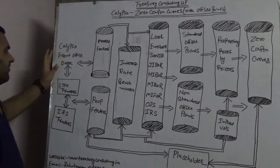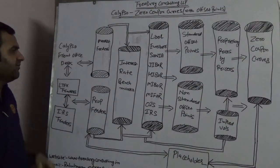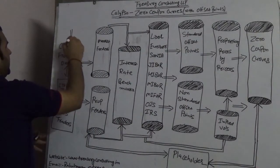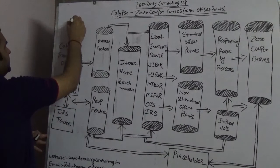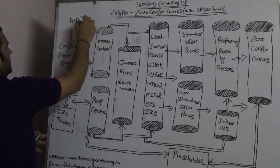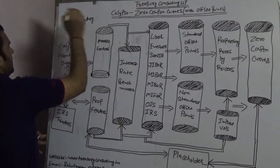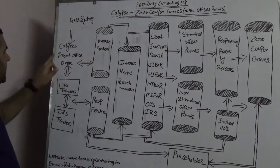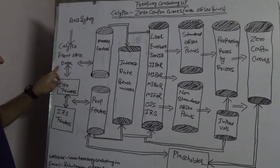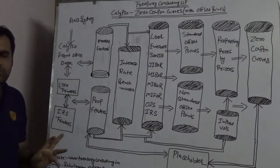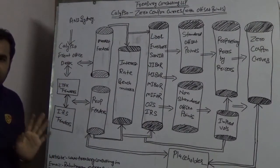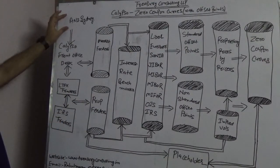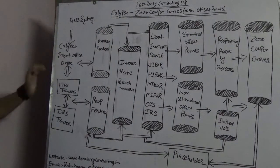You have a Calypso front office desk — a front office desk of any bank. Assuming this is ANZ Sydney, which is Australian New Zealand Bank Sydney. They are using Calypso and they have a front office desk. Please note that all these names are only for the sake of examples to make things clear.